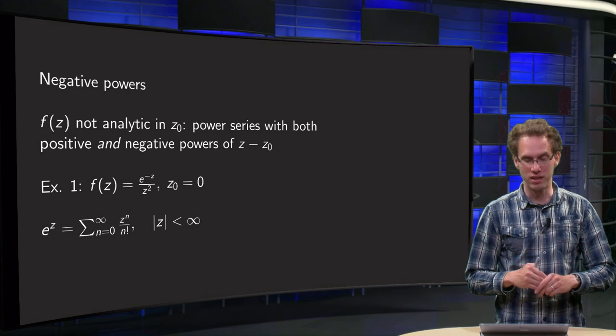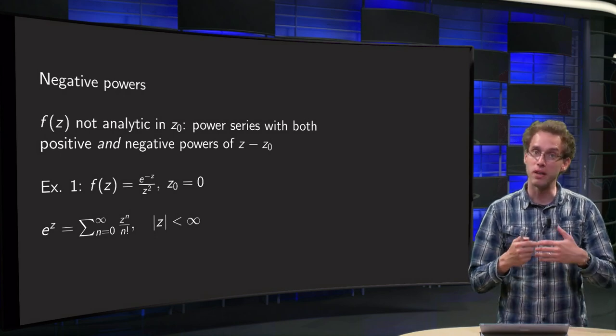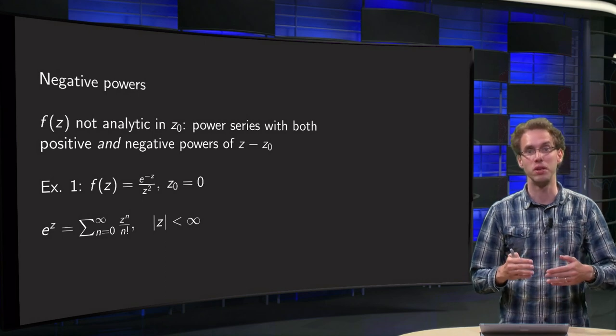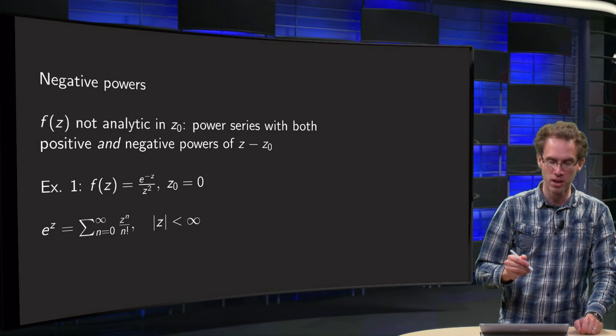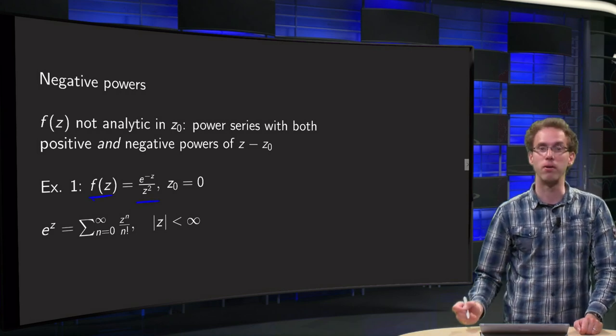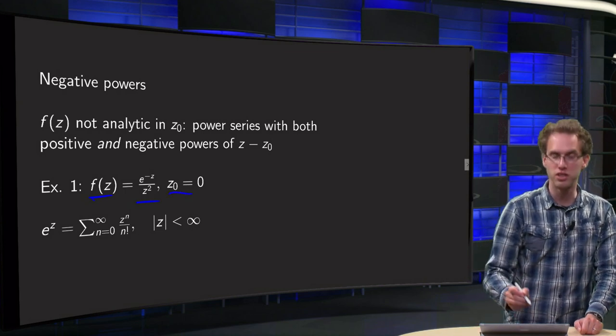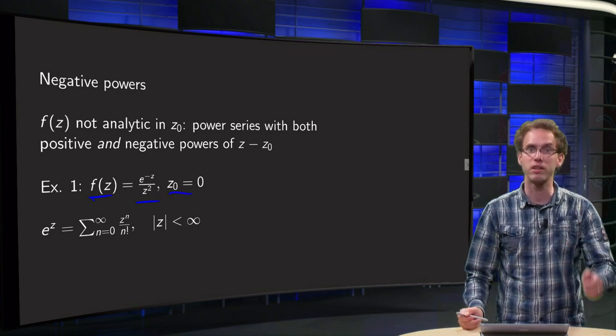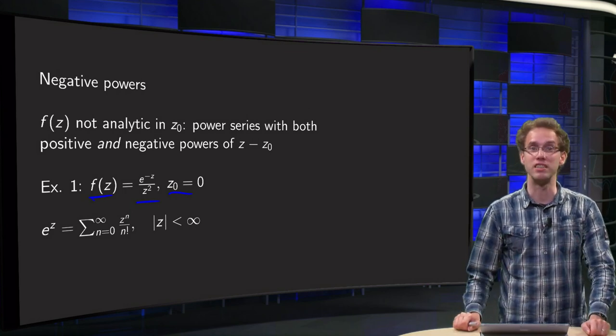So if f(z) is not analytic in z0 but it is analytic around it, we can still form power series if we contain both positive and negative powers in z minus z0. Take for example f(z) equals e to the power minus z over z squared. We want to form something around z0 equals zero. Well, it is problematic of course because you are dividing by zero. f is not even defined in z0 equals zero.